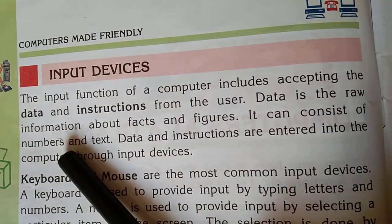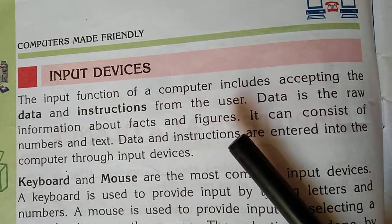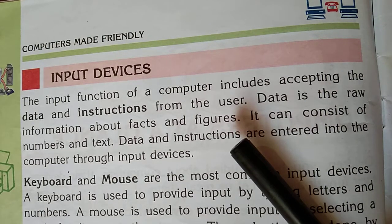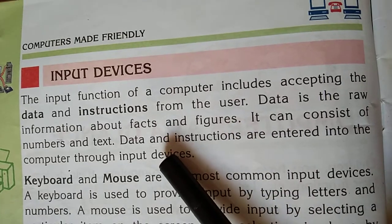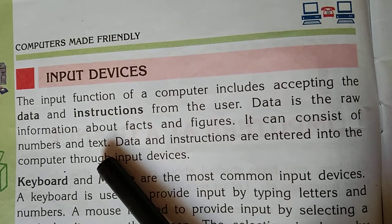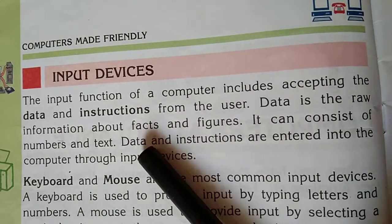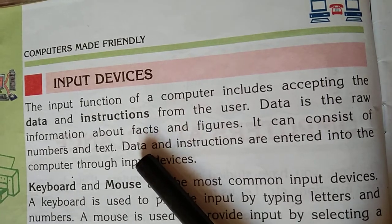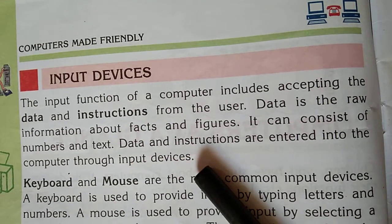What is data? Data is the raw information about facts and figures. It can consist of numbers and text. Data and instructions are entered into the computer through input devices. The instructions tell the computer how to process the data. The devices or hardware parts through which we give data and instructions to the computer are called input devices.